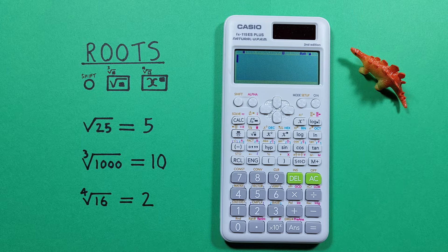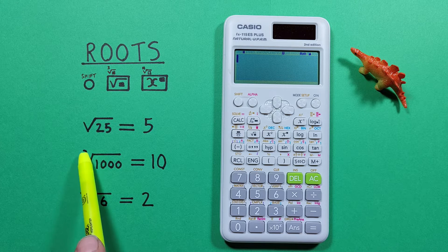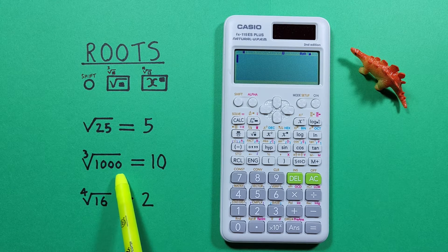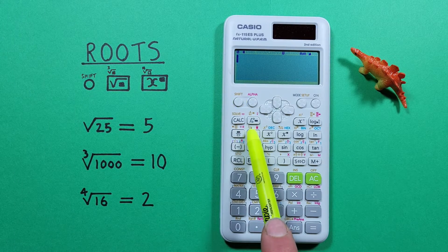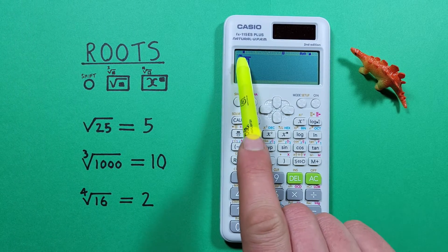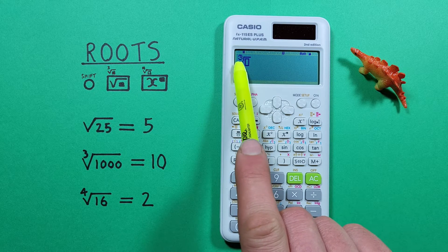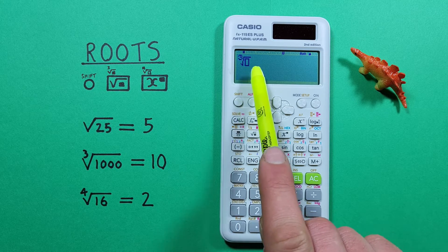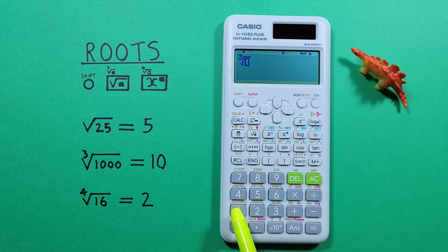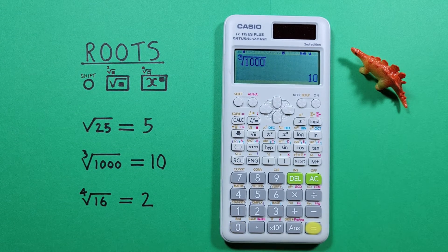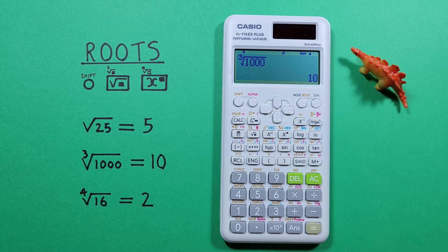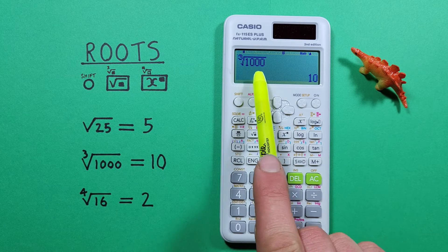If we want to cube root a number, like the cube root of 1000, we press shift and then the square root key. We see the 3 in the cube root position, then in the box underneath we enter 1000, press equals, and see the cube root of 1000 equals 10.